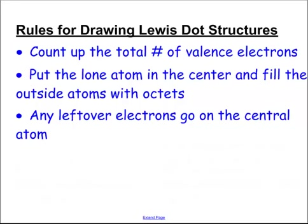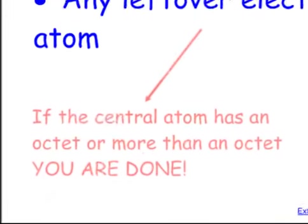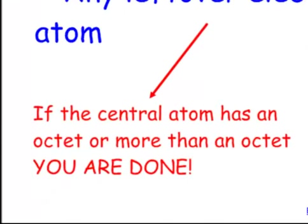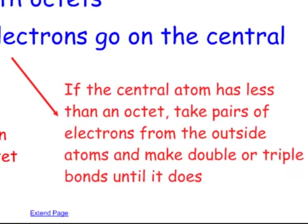We have two options at this point. If the central atom has an octet right now, or more than an octet, you're done. If the central atom has less than an octet, what you're going to do is take pairs of electrons from the outside atoms, which are filled with octets, and make either a double or a triple bond until the central atom has an octet.